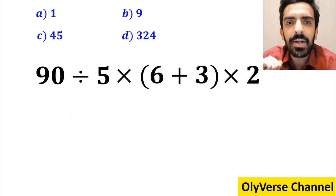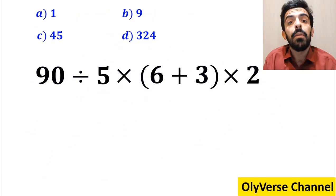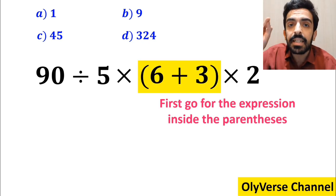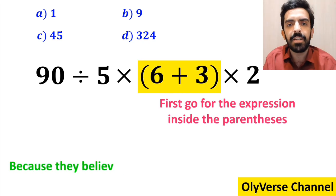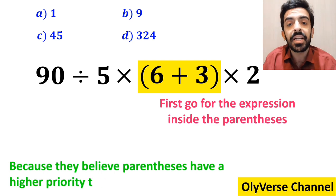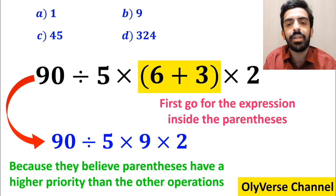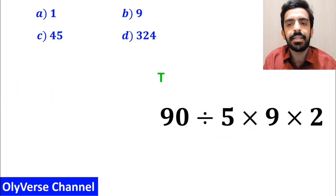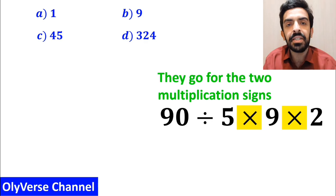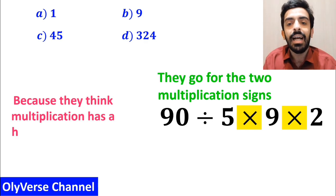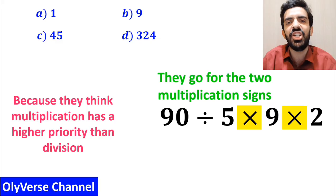Let's dive in and break it down step by step together. Many people when trying to solve this question first go for the expression inside the parenthesis, because they believe parenthesis have a higher priority than the other operations. So they simplify this expression to 90 divided by 5 times 9 multiplied by 2. And the next step, they go for the two multiplication signs that I've highlighted in yellow, because they think multiplication has a higher priority than division.